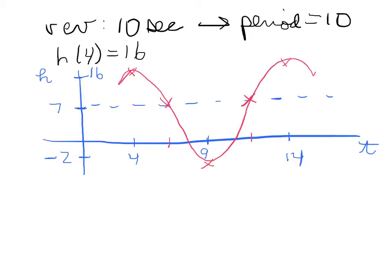Alright, so now let's write down what the function is. So the first thing to notice is that this is best described as a cosine graph. Cosine starts at the top and goes down and then goes back to the top again. We have a horizontal shift, 4 to the right. We have a vertical shift, 7 up. And remember now, we're told that the period is 10.